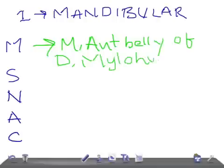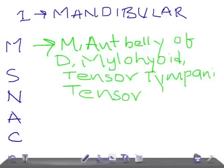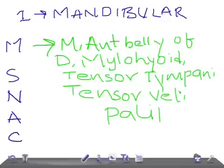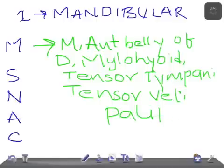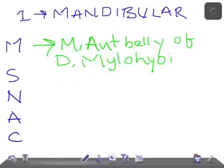Continuing the muscles from the first pharyngeal arch: tensor tympani and tensor veli palatini. So in summary, the mandibular arch gives rise to the muscles of mastication, anterior belly of digastric, mylohyoid, tensor tympani, and tensor veli palatini. These are very important.